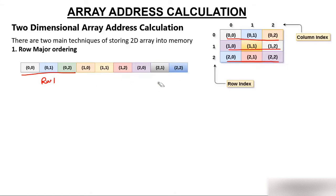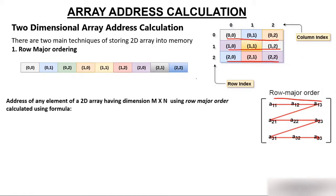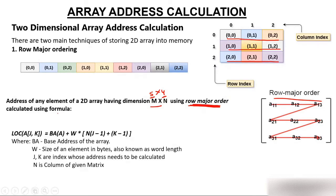In row major order, elements are stored row by row. If we see a matrix and store elements first from row one, then row two, and so on, this is row major order. Now the formula: for a 2D array having dimension M×N, the address of any element is calculated using the row major order formula. Suppose a matrix is 5×4 — here M is 5 and N is 4.